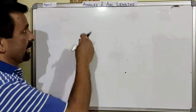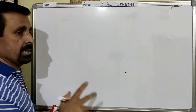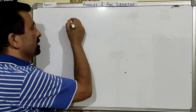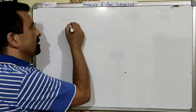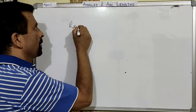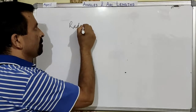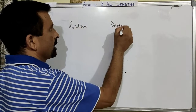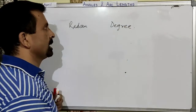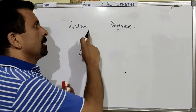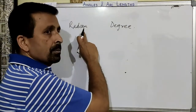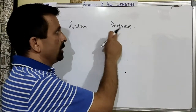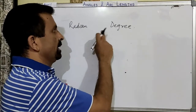We need to know that the angle can be measured in two units. One is called the radian and another is called the degree. The unit of the angle is radian or degree. We can measure in either of these two units.